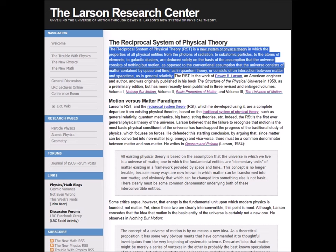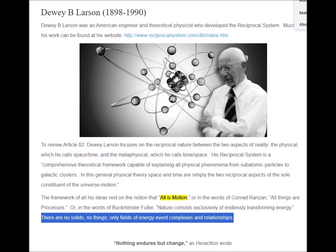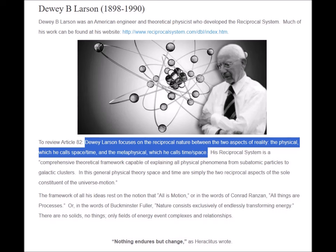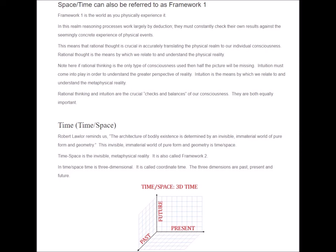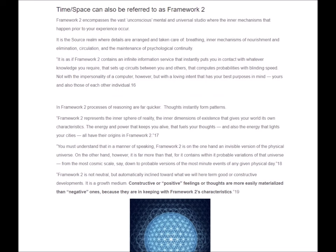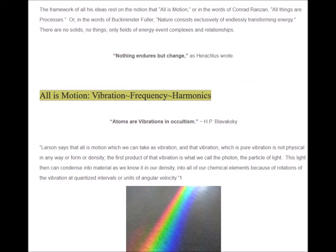It says here that the Reciprocal System of physical theory is a system in which the properties of all physical entities, from the photons of radiation to subatomic particles to the atoms of elements to galactic clusters, are deduced solely on the basis of the assumption that the universe consists of nothing but motion. This is as opposed to the conventional assumption that the universe consists of matter contained by space and time, as in quantum theory, or consists of an interaction between matter and space-time, as in general relativity. Larson's Reciprocal System cosmology, as its name implies, focuses on the reciprocal nature between two aspects of reality. One is the physical reality, or Framework One—this is also known as the space-time that we're familiar with. The other is the metaphysical reality, or Framework Two—this is referred to as time-space, the reciprocal of space-time.